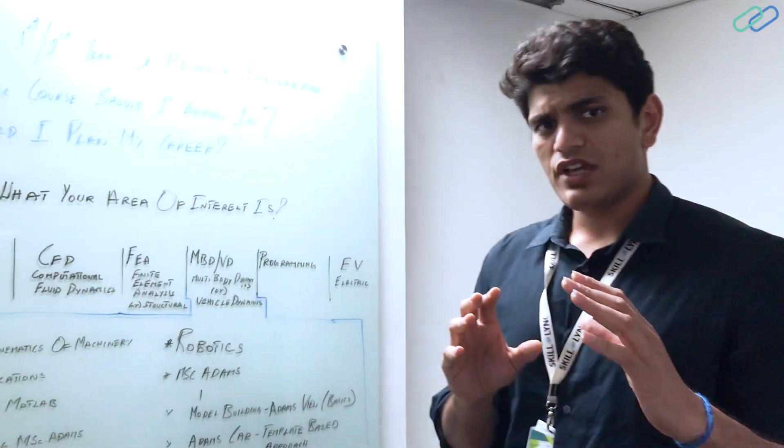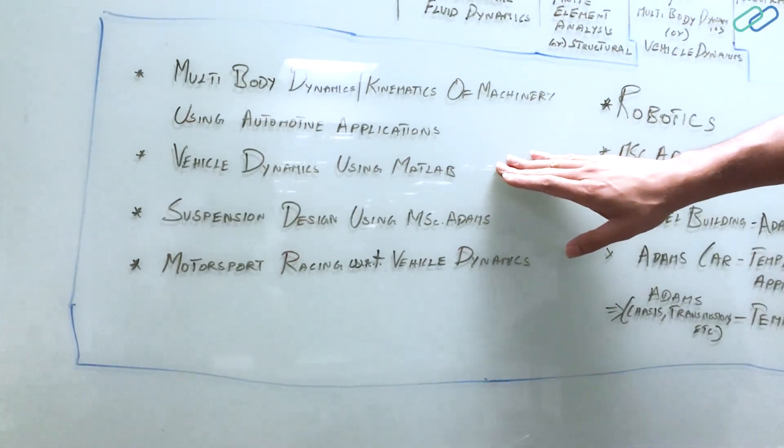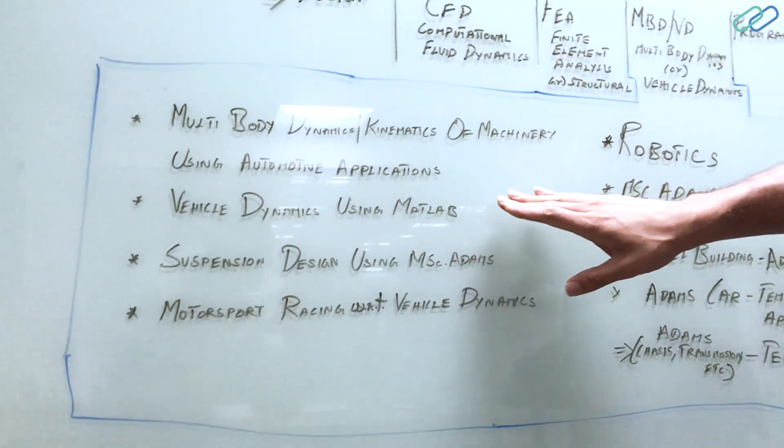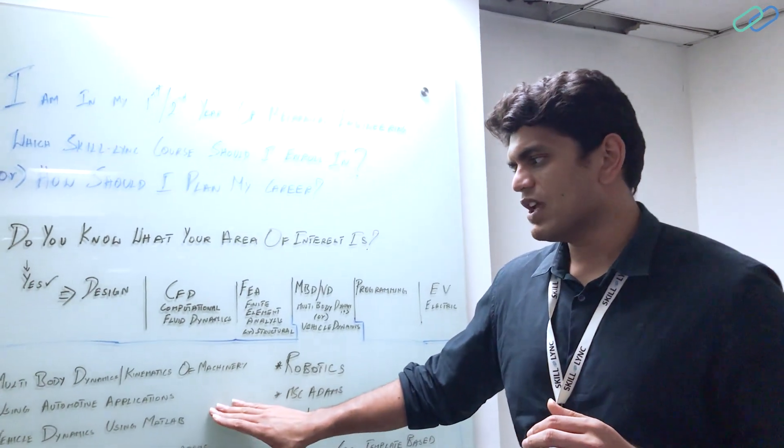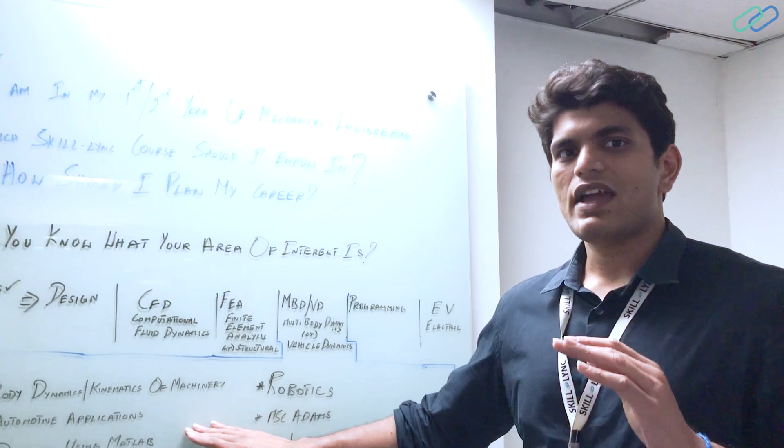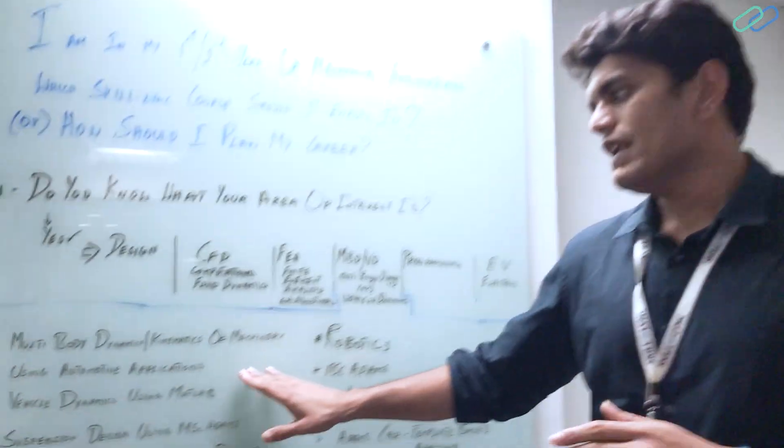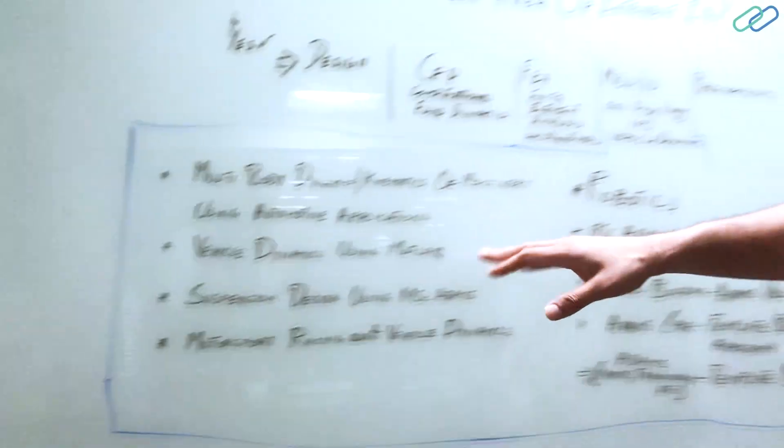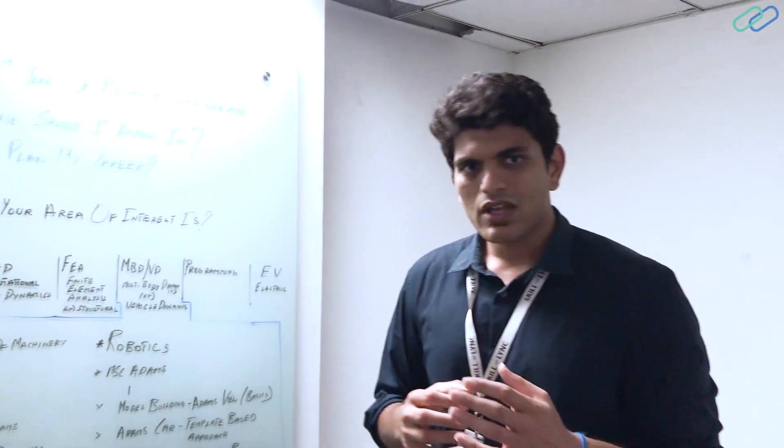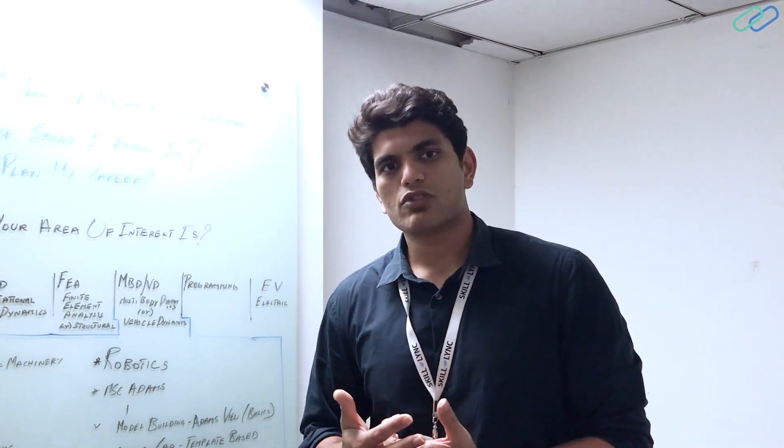If you are interested in automotive engineering, the courses that you should look into is vehicle dynamics using MATLAB. So this course basically looks into suspension design, tire modeling, vehicle ride, vehicle handling, and how you can model them using a software called MATLAB. MATLAB is a lot of mathematical coding. You understand the equations behind the vehicle dynamics and develop your own solvers in MATLAB.